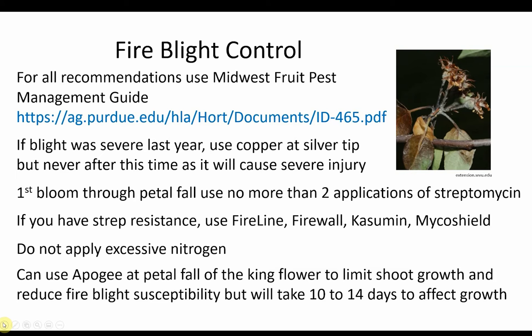Where fire blight resistance is a problem, other products such as Fireline, Firewall, Kasumin, or Mycoshield can be used. Fire blight can also be problematic where excessive nitrogen has been applied. If there is overly vigorous shoot growth, Apogee can be applied at petal fall of the king flower to limit shoot growth and fire blight. Be advised that this product takes 10 to 14 days to affect growth. For detailed recommendations for fire blight and other pests, refer to the Midwest Fruit Pest Management Guide, which is available online.